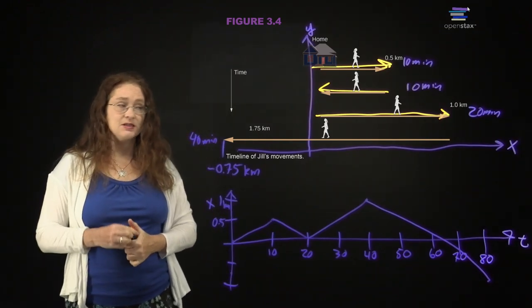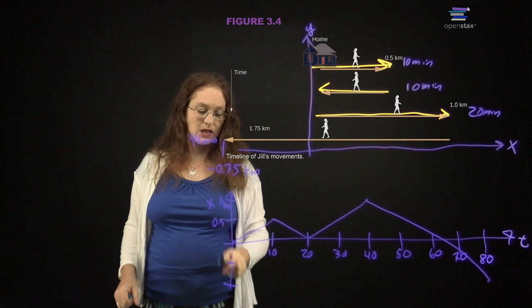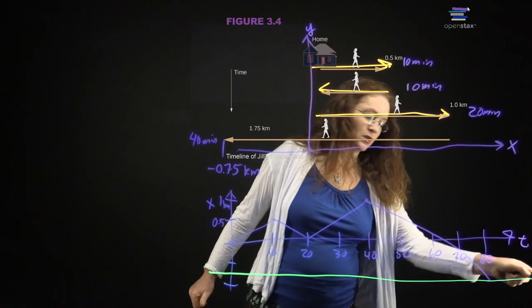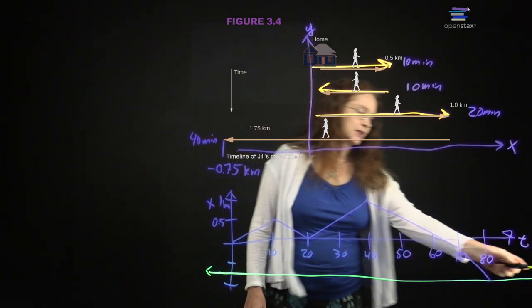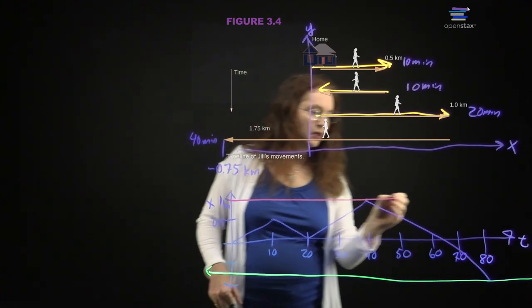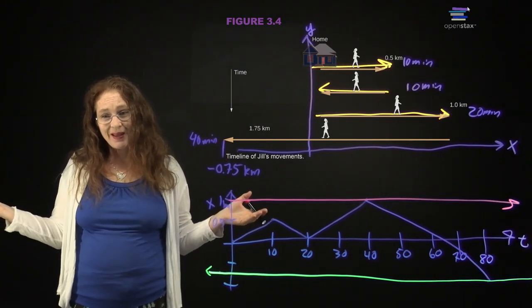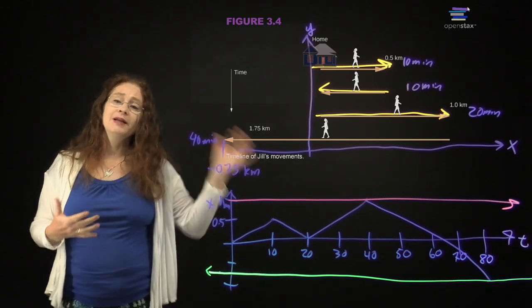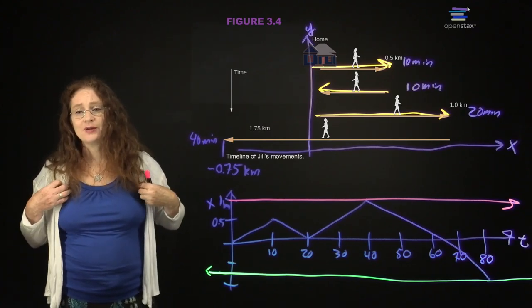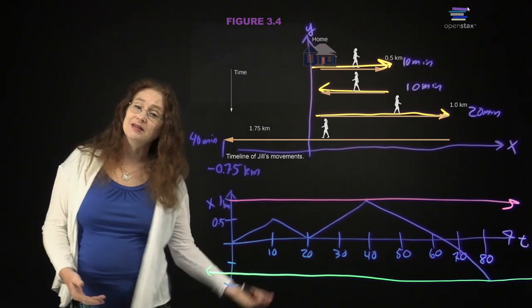The choice of where we put the zero for the position is totally arbitrary. If we had put zero somewhere else, we would just have a different x-axis and shift everything. This highlights one of the first things about physics problems: there are a lot of arbitrary choices. There is no one right answer. But a complete answer for a problem like this is going to define what your coordinate system is, and then you're drawing a picture relative to that coordinate system. Sometimes we tell you what coordinate system to use, and often there is one that is most obvious, but that does not mean it's the only right answer.